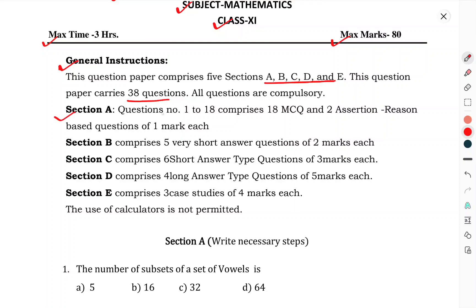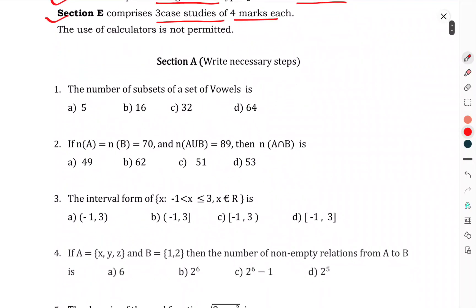All questions are compulsory. Section A, question number 1 to 18, comprises 18 MCQs, two assertion-reason based questions, 1 mark each. Section B comprises 5 very short answer questions, 2 marks each. Section C comprises 6 short answer questions, 3 marks each. Section D comprises 4 long answer type questions, 5 marks each. Section E comprises 3 case studies, 4 marks each. The use of calculator is not permitted.